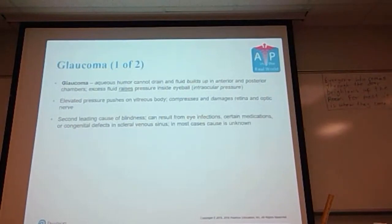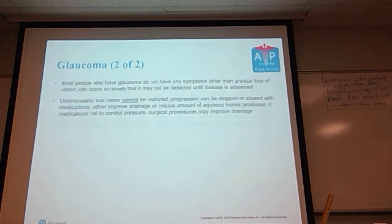The vitreous humor then compresses and damages the retina and optic nerve. Glaucoma is the second leading cause of blindness amongst humans. Glaucoma can result from eye infections, certain medications, or congenital defects in the scleral venous sinus. However, in most cases the overall cause is unknown. Most people who have glaucoma do not have any symptoms other than gradual loss of vision, and this can occur so slowly that it may not be detected until the disease is advanced. Unfortunately, the lost vision cannot be restored. Progression can be stopped or slowed with medications that either improve the drainage or reduce the amounts of aqueous humor being produced.